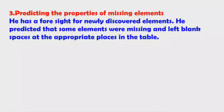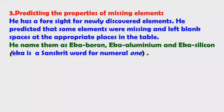He predicted the properties of missing elements and had foresight for newly discovered elements. He predicted that some elements were missing and left blank spaces at appropriate places in the table. He named them as Eka boron, Eka aluminium, and Eka silicon. 'Eka' is a Sanskrit word meaning 'one'.